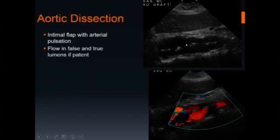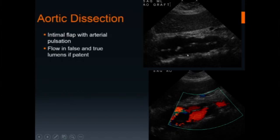This is an image of an aortic dissection. This longitudinal image demonstrates a linear hyperechogenicity within the lumen of the aorta representing the dissection flap. The false and true lumens are shown, and flow is seen in both the false and true lumens in this patient.